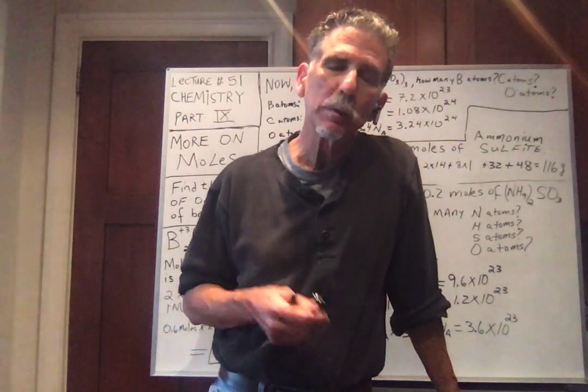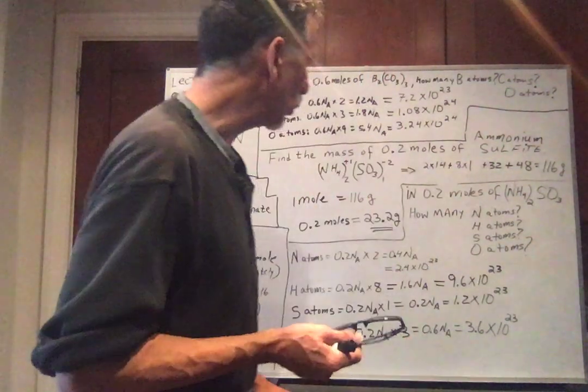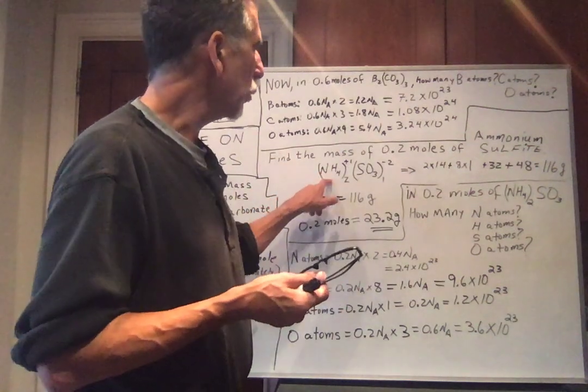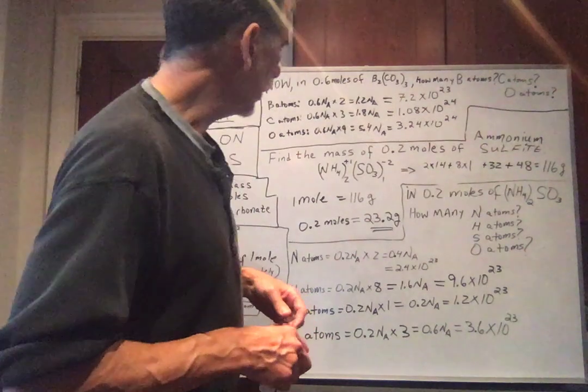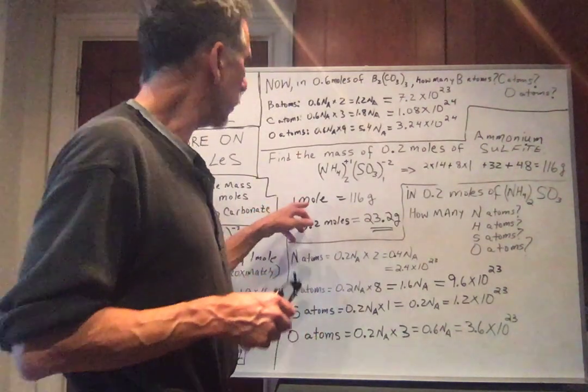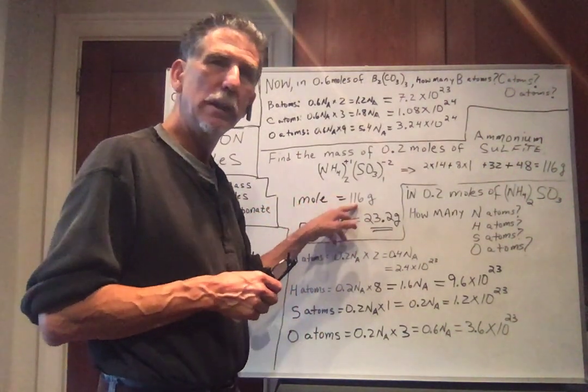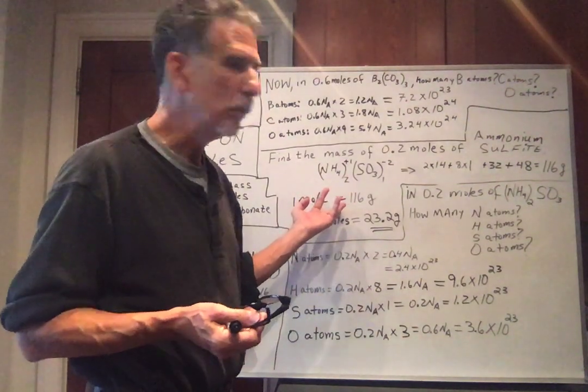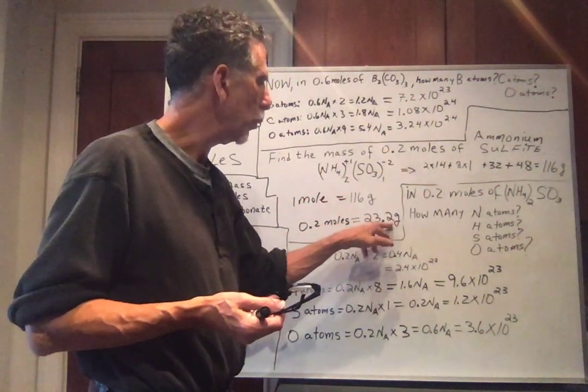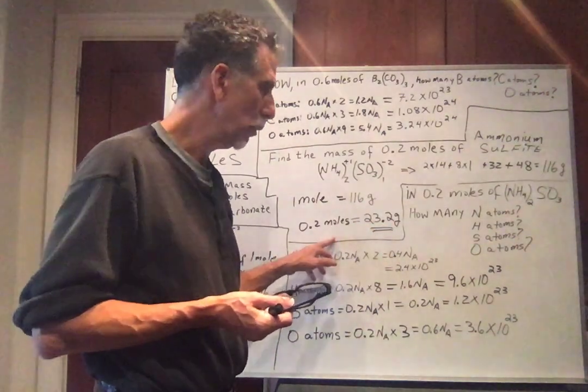What is 116 grams? It's the mass of 1 mole of ammonium sulfite. 1 mole. So if the mass of 1 mole is 116 grams, the mass of 0.2 moles, just multiply by 0.2. And we get 23.2 grams. That's our answer.